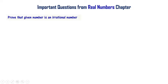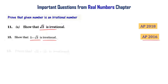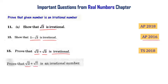Proving that a given number is irrational is one of the important questions. Show that root 3 is an irrational number — that is AP final exam 2018. Show that 5 minus root 3 is an irrational number — that is AP final exam 2016. Prove that root 2 plus root 3 is irrational — that is Telangana final exam 2018. Prove that root 2 plus root 7 is an irrational number — that is Telangana final exam 2019.